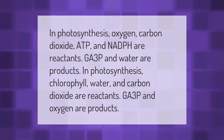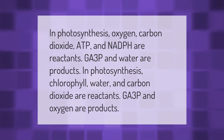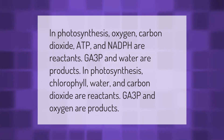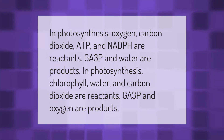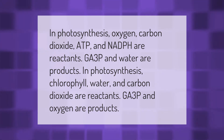In photosynthesis, oxygen, carbon dioxide, ATP, and NADPH are reactants, while GA3P and water are products. In another stage of photosynthesis, chlorophyll, water, and carbon dioxide are reactants, and GA3P and oxygen are products.